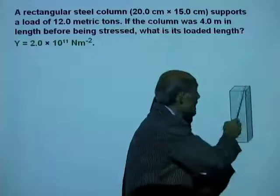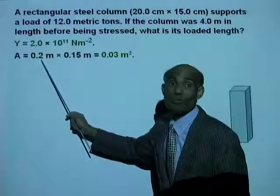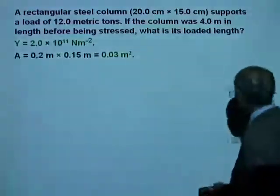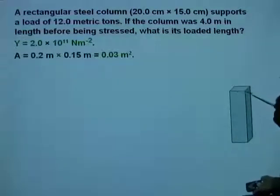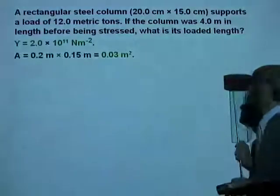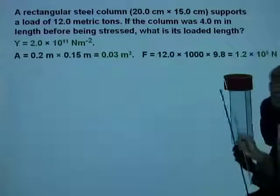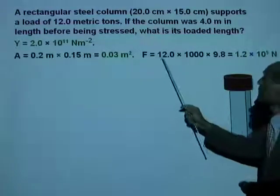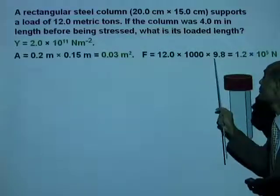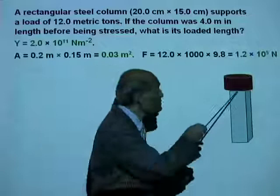The area is 0.03 meters squared, and on that area is a load of 12 metric tons. The weight of 12 metric tons acts vertically on this column. The mass is 12 times 1000 kilograms. Multiplying by 9.8 gives 1.2 times 10 to the power of 5 newtons. That is the force acting on the column.